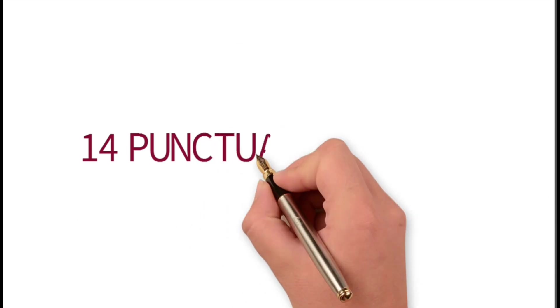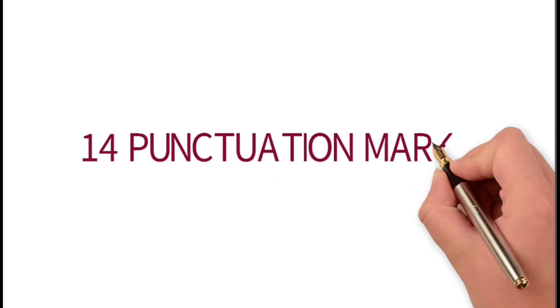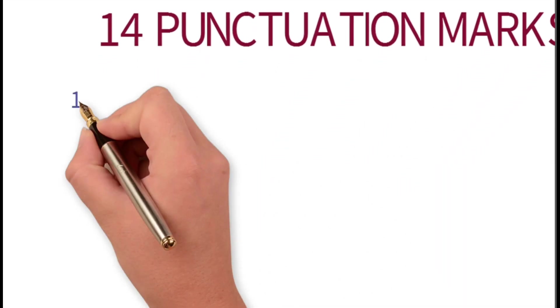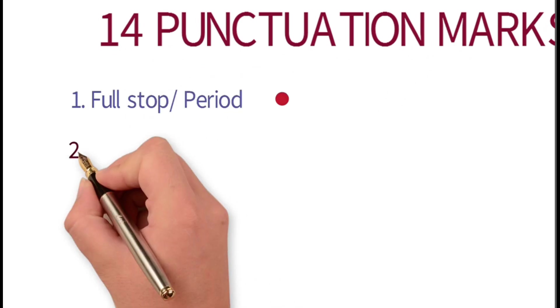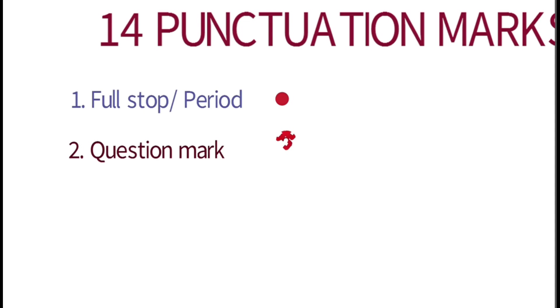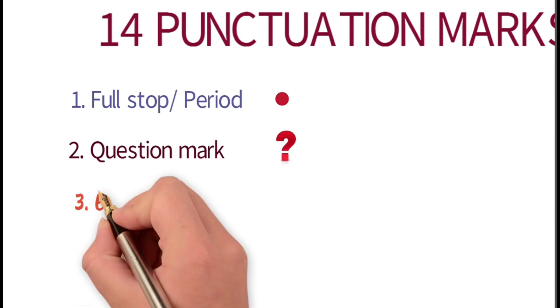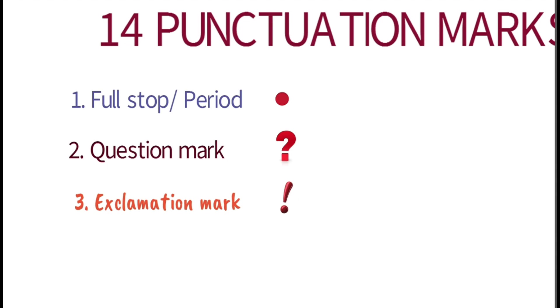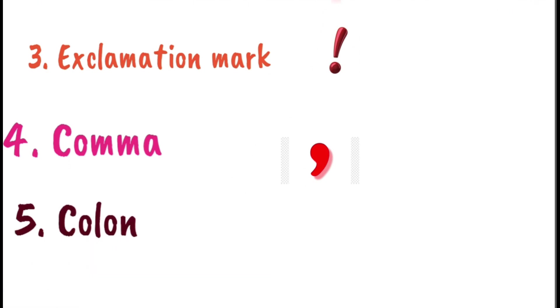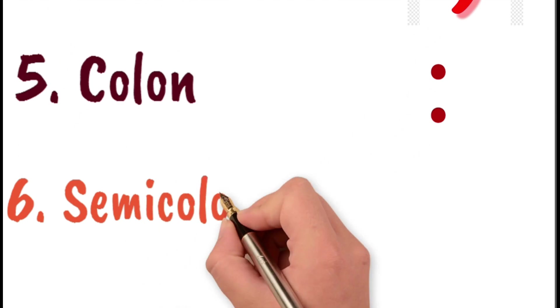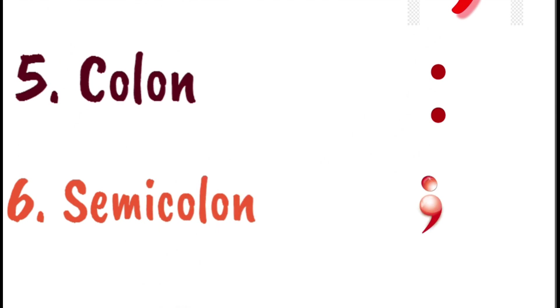Let me introduce 14 principal punctuation marks in English language. The first, the full stop or the period. Second, the question mark or the interrogation mark. Third, the exclamation mark or the exclamation point. Fourth, the comma. Fifth, the colon. Sixth, the semicolon. Please notice the difference between the symbols of these two punctuation marks.